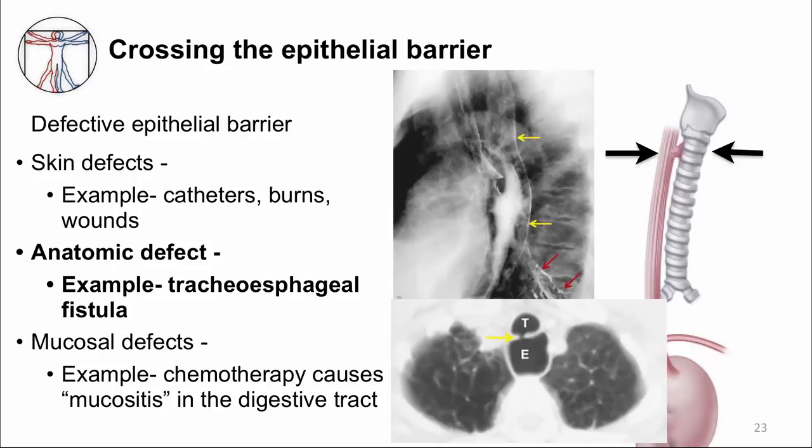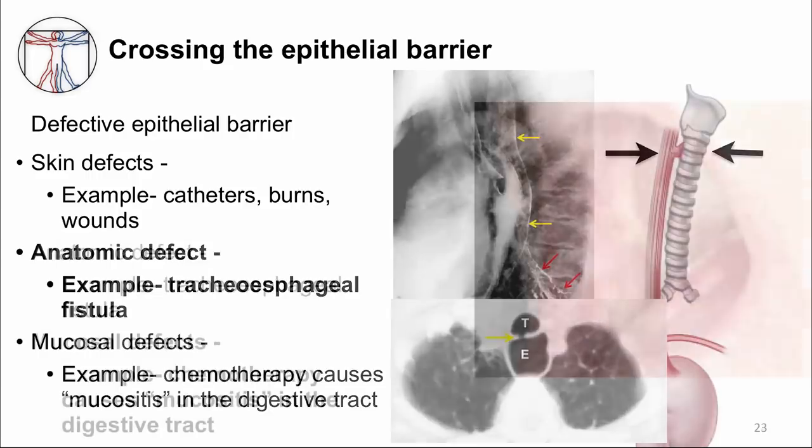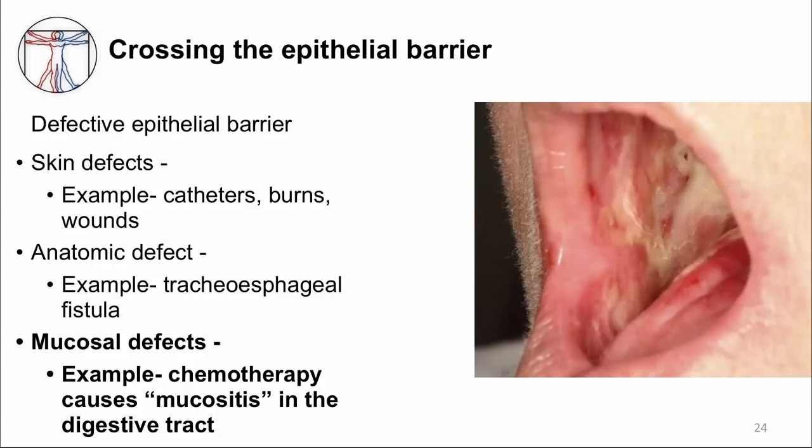Breakdown of the epithelial barrier can also be caused by drugs such as chemotherapeutic agents used to treat cancer. In the picture on the slide, you can see the oral mucosa has these whitish ulcerations. And similar lesions can develop all along the entire GI tract. This particular patient has cancer and is receiving chemotherapy. We call this pattern mucositis. The mucosal defect predisposes patients to bloodstream infections with their own microbial colonizers.